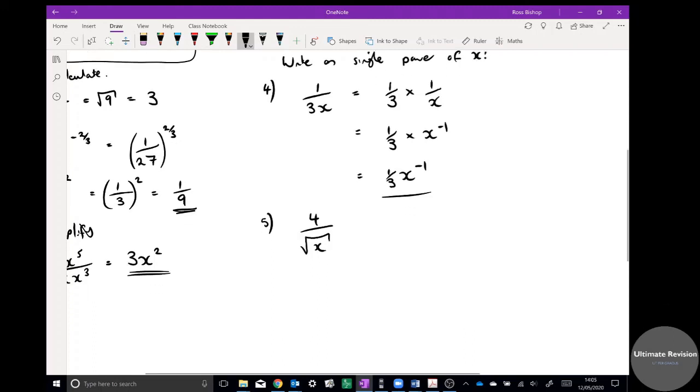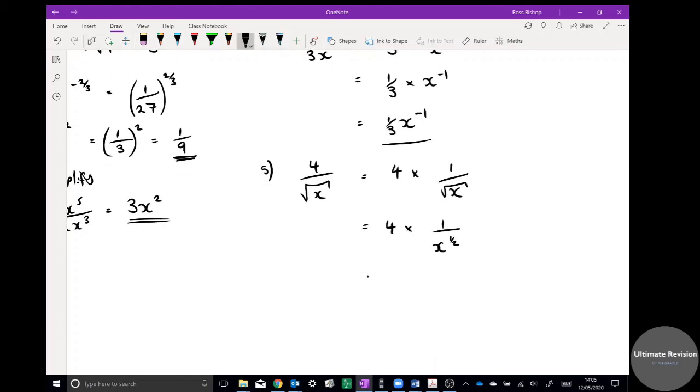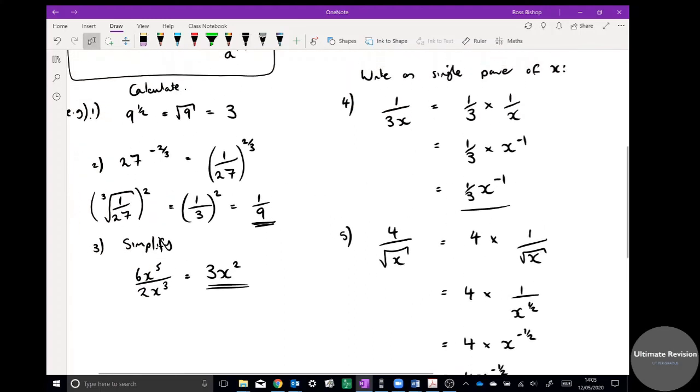This one, again I'm going to split it up. So it's going to be four times one over root x, which is the same as four times one over x to the half if I change the root to a half. That's the same as four times x to the minus half. Then I can just tidy that up by saying four x to the minus half. That would be how I would answer that question.